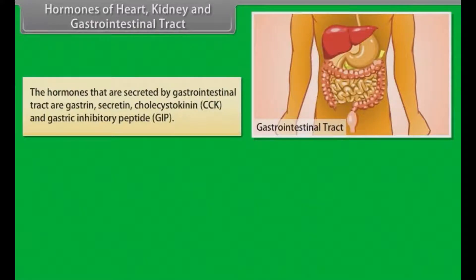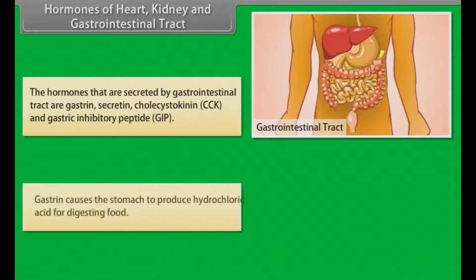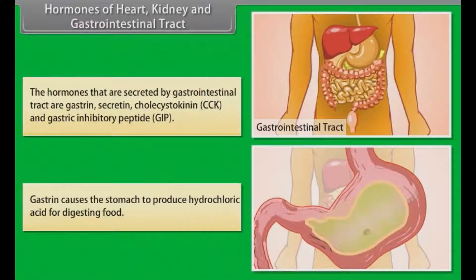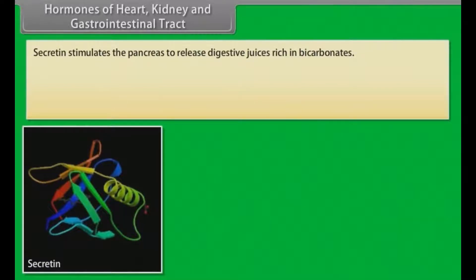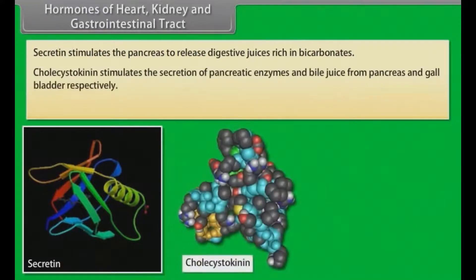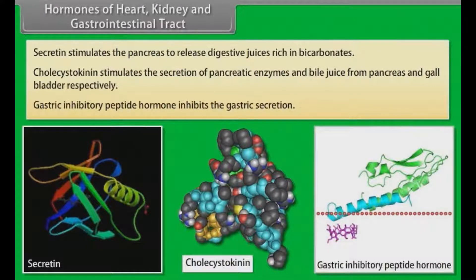The hormones secreted by the gastrointestinal tract are gastrin, secretin, cholecystokinin (CCK), and gastric inhibitory peptide (GIP). Gastrin causes the stomach to produce hydrochloric acid for digesting food. Secretin stimulates the pancreas to release digestive juices rich in bicarbonates. Cholecystokinin stimulates the secretion of pancreatic enzymes and bile juice from the pancreas and gallbladder respectively. Gastric inhibitory peptide inhibits gastric secretion.